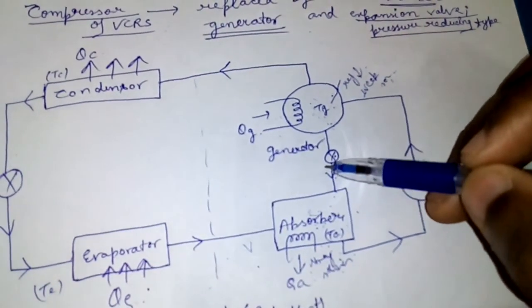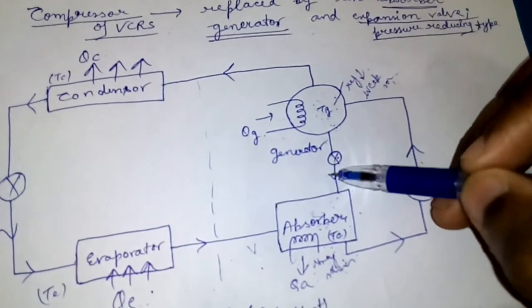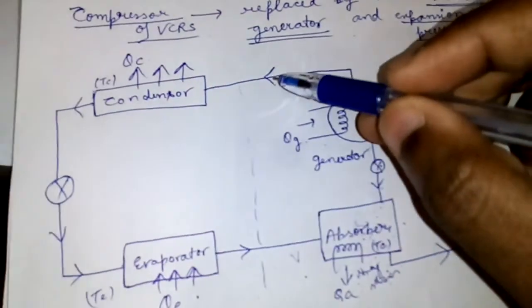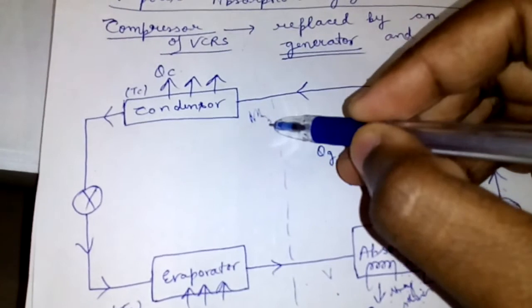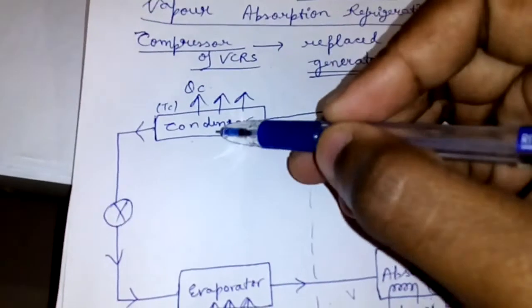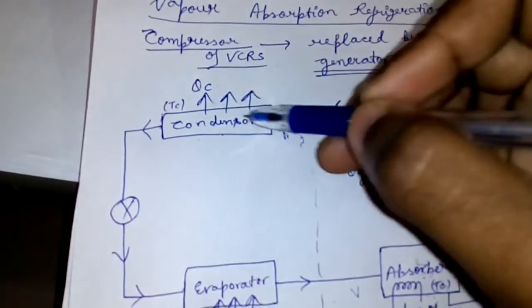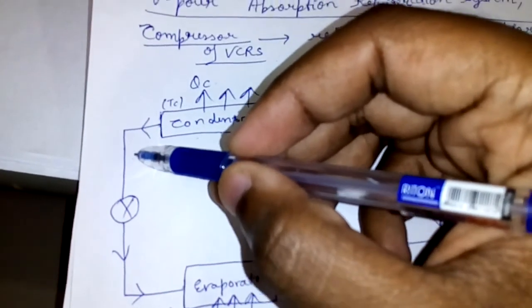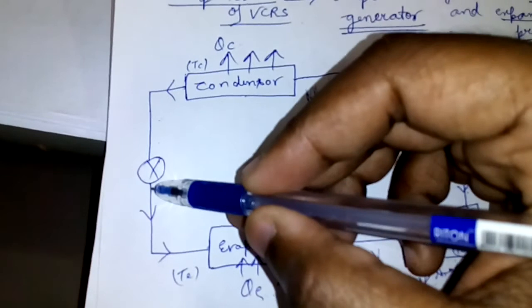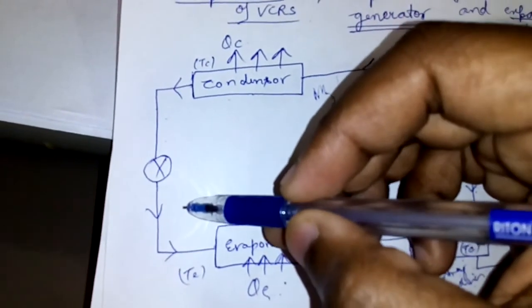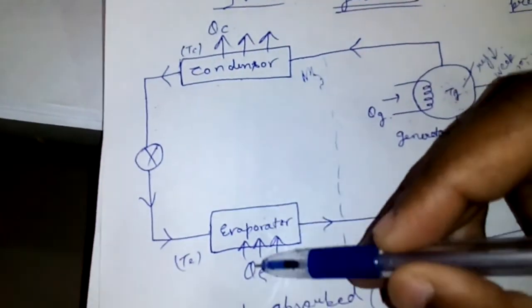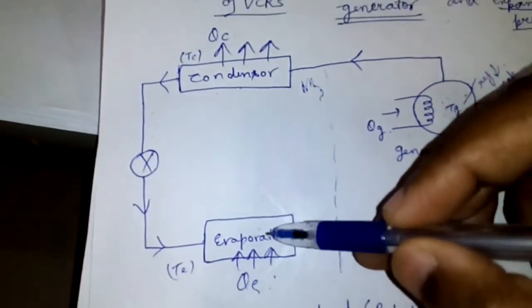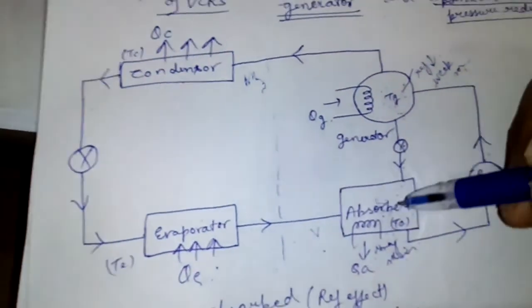The ammonia vapors continue in condenser where heat is rejected. Liquid plus vapor NH3 is formed, and after expansion valve NH3 liquid is formed. From evaporator it takes the latent heat from surroundings and again the refrigeration cycle continues.